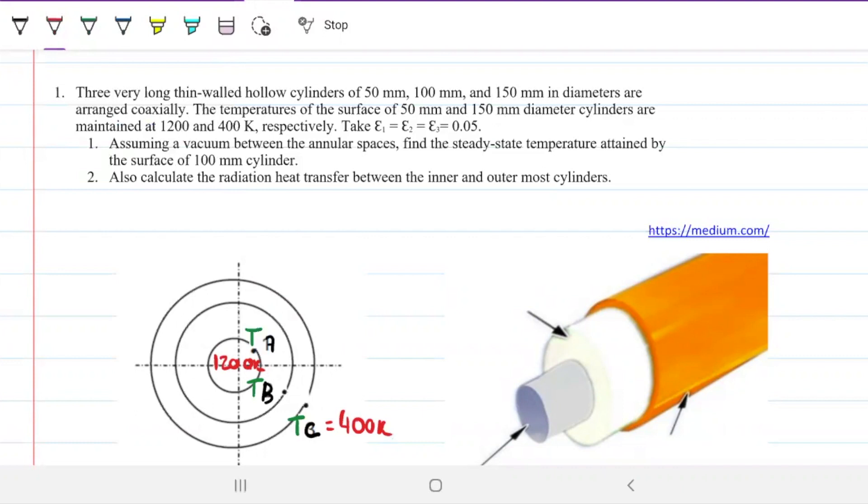The emissivity of all of them is 5%. Assuming a vacuum between the annular spaces, find the steady state temperature attained by the surface at 100 mils. So we want to know what is the temperature of this fella here. Let's give some names: TB here, that's what we're looking for.